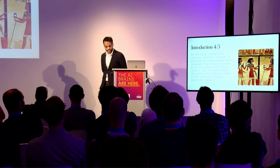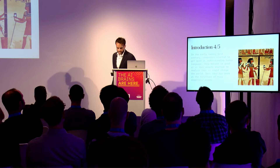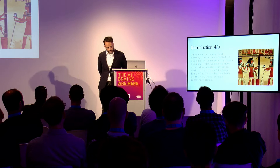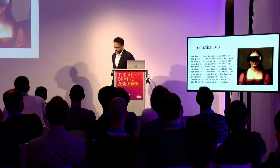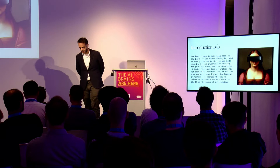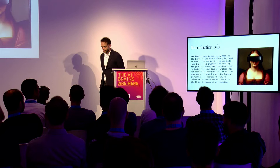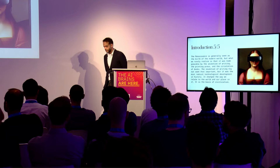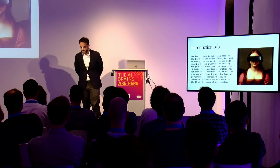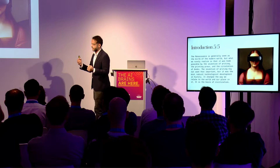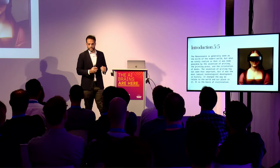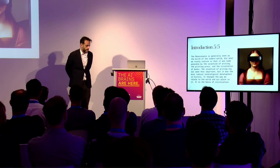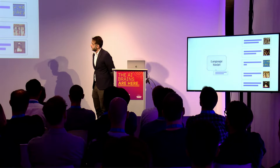In the early 21st century, computers started to get good at understanding human language. They became so good that people started to realize it could change the world. The Renaissance is generally seen as the birth of the modern world, but what we rarely realize is that it was made possible by the invention of writing, the printing press, and the circulation of books. The invention of writing may not seem that important, but it was the most radical technological development in history — it changed the way we relate to our world. I bring up writing, the printing press, and the internet as language technologies that changed human history. And we're talking now about one potential change that changes how humans work with technology: the language model.